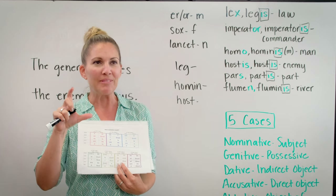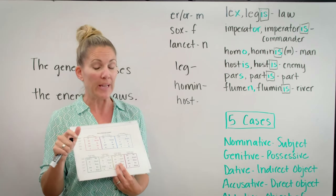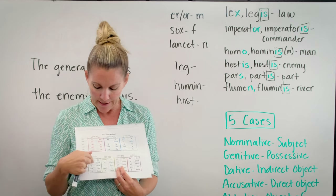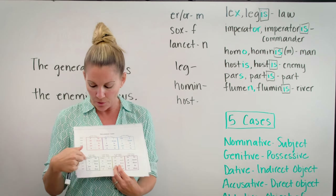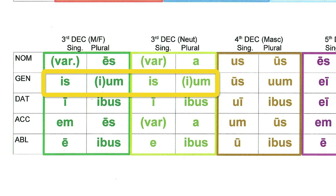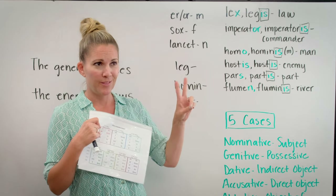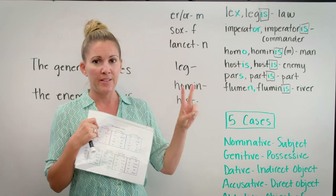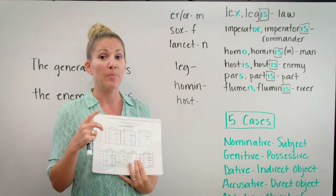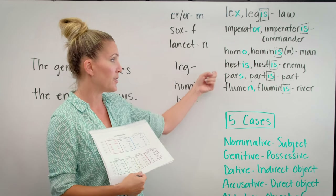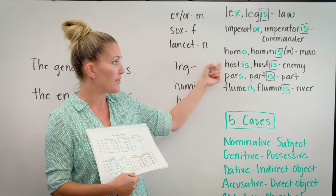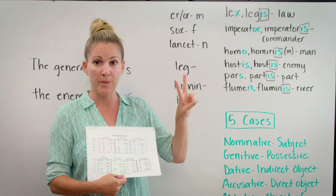I want to point out that in the genitive plural of the third declension, you'll see an I in parentheses. There is a rule: if you have a noun in the third declension and the nominative singular and the genitive singular have the same number of syllables — like 'hostis, hostis,' both having two syllables...